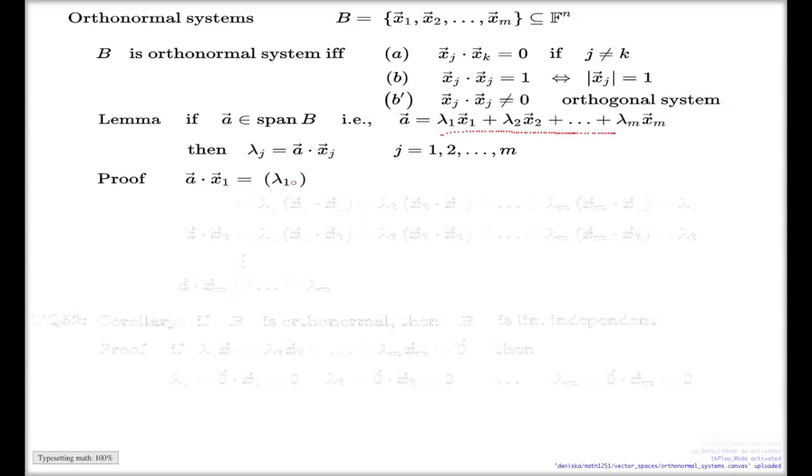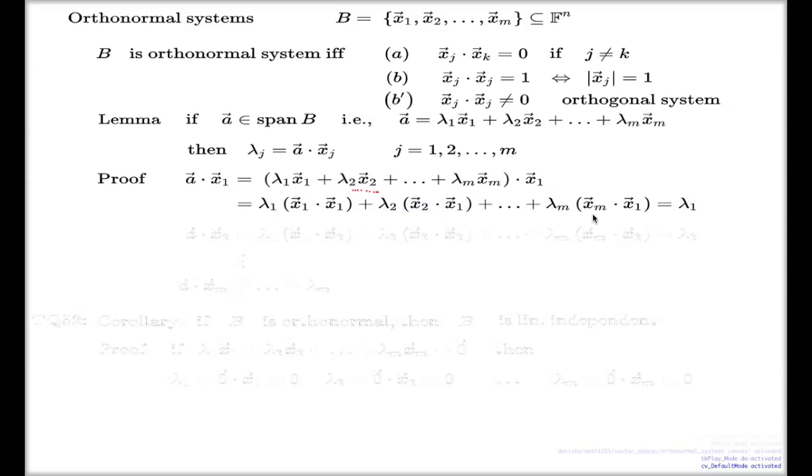It's a long bracket: λ₁x̄₁, λ₂x̄₂, plus dots plus λₘx̄ₘ. And here's my dot product. It's a simple replacement. Now if I expand these brackets, because we know that the dot product is subject to the regular distributive law, so we can do the regular expansion. And here's my expansion: x̄₁ comes next to x̄₁, x̄₁ comes next to x̄₂, and many others. The last one will be x̄₁ next to x̄ₘ.